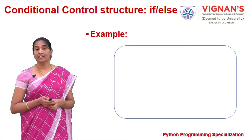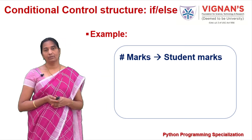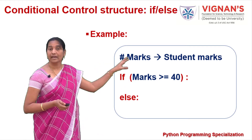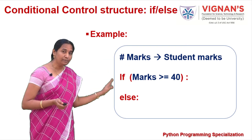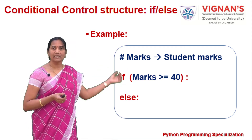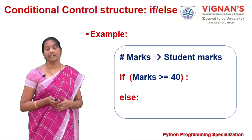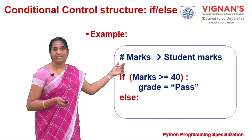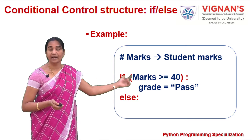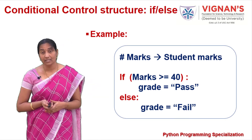Consider this if-else example with a student marks variable. If marks are greater than or equal to 40, the statements in the if block assign grade as 'pass'. In the else part, the statements to execute when the condition is false are specified — when marks are less than 40, the grade is assigned as 'fail'. This is how if-else chooses one of two possible paths.